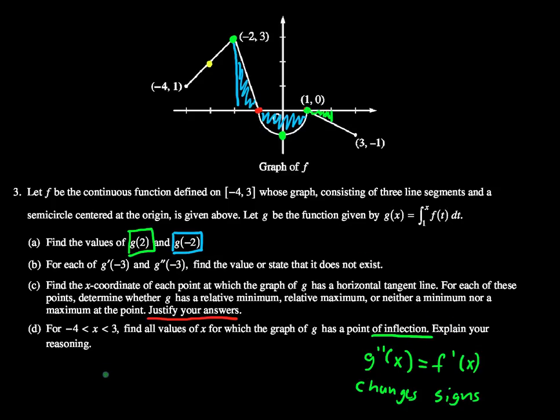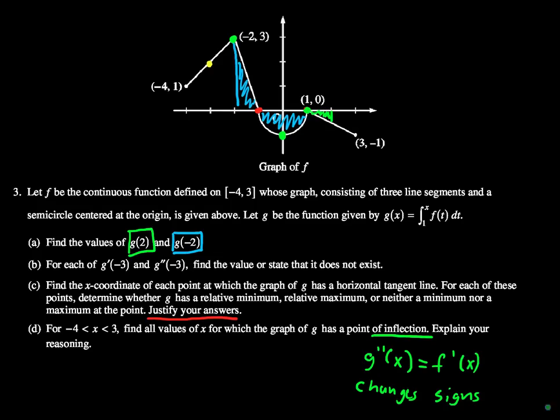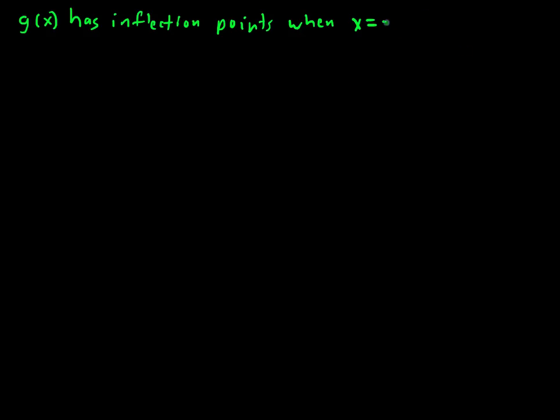I need to explain the reasoning. Not quite as strict as justifying, but still we need to put some explanation behind what we're saying. So the solutions: we'll say g of x has inflection points when x equals negative 2, 0, and 1. When x equals negative 2, x equals 0, and x equals 1. That's the answer. Now we need to explain our reasoning for this.